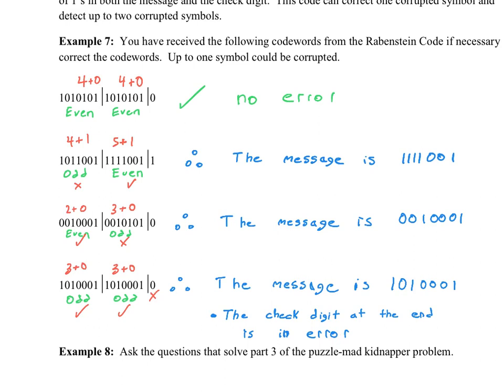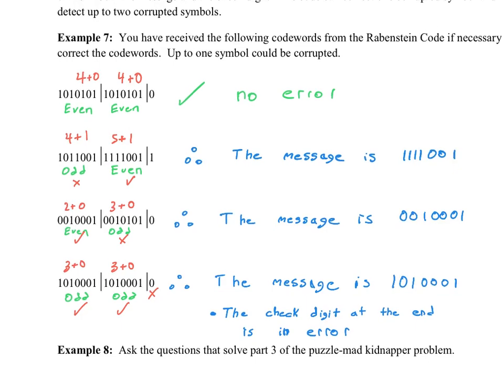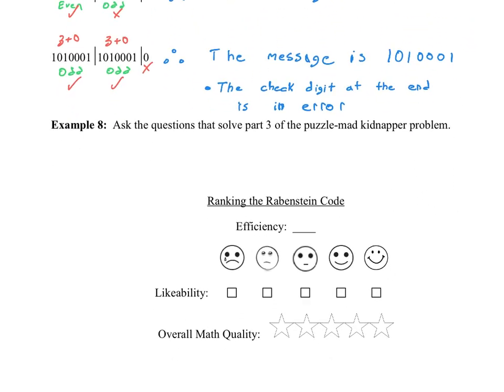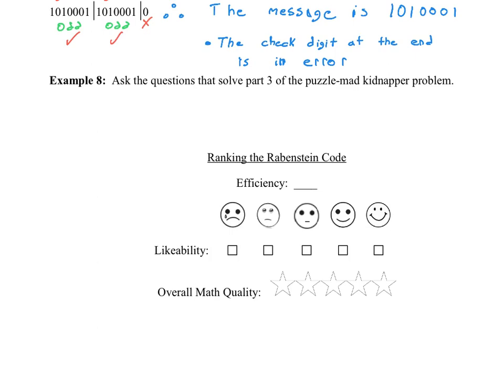Now let's summarize Mark Ravenstein's code. The efficiency: our message length was seven, and the total length was 15. So seven out of 15. I thought this was a pretty creative idea — I'll give it a happy face. What we need is 11 out of 15, and this is certainly a good start. I'd say it's pretty much half the way there, so I'll give it half the stars.